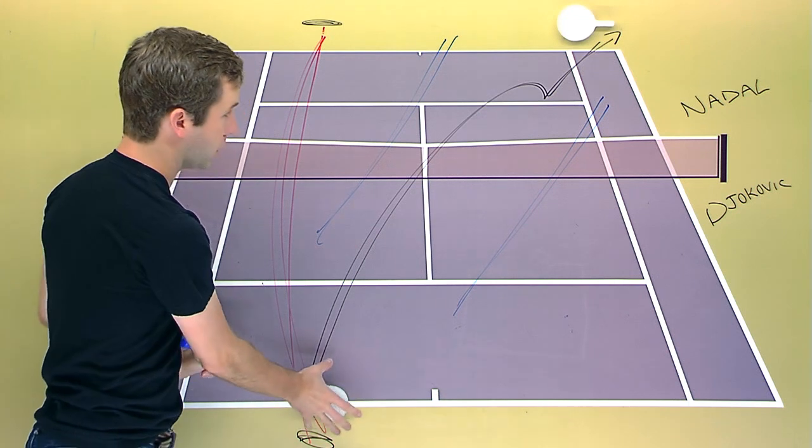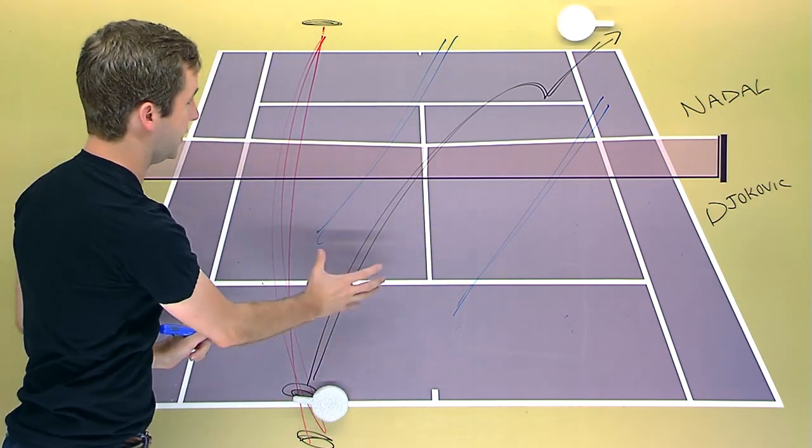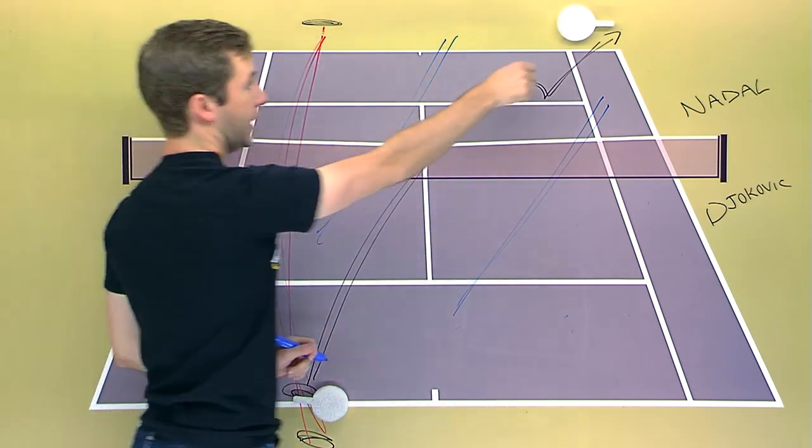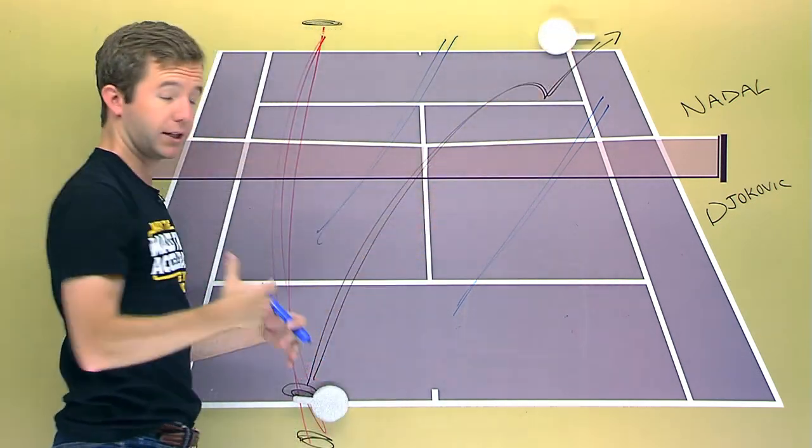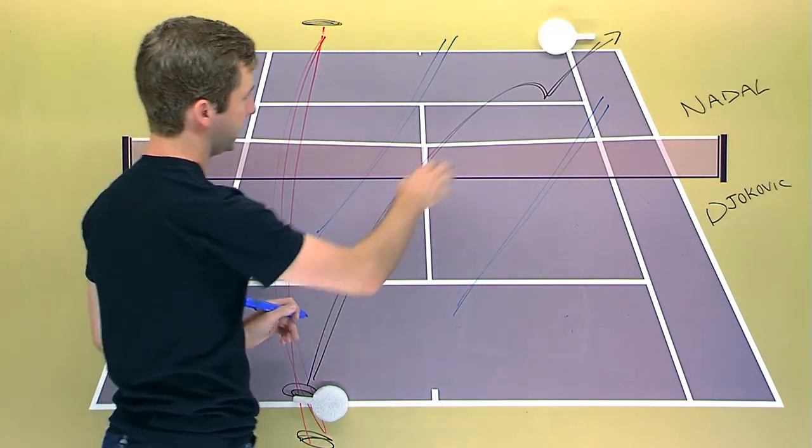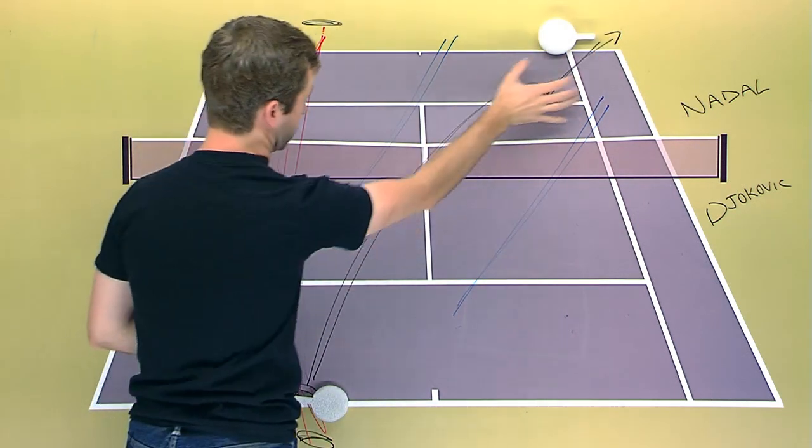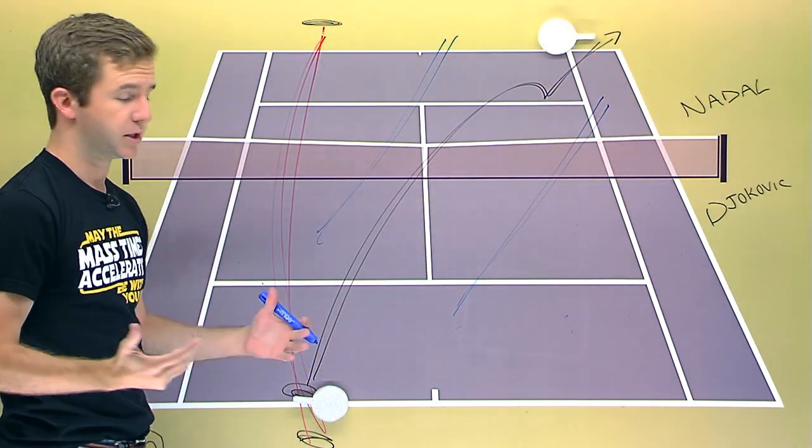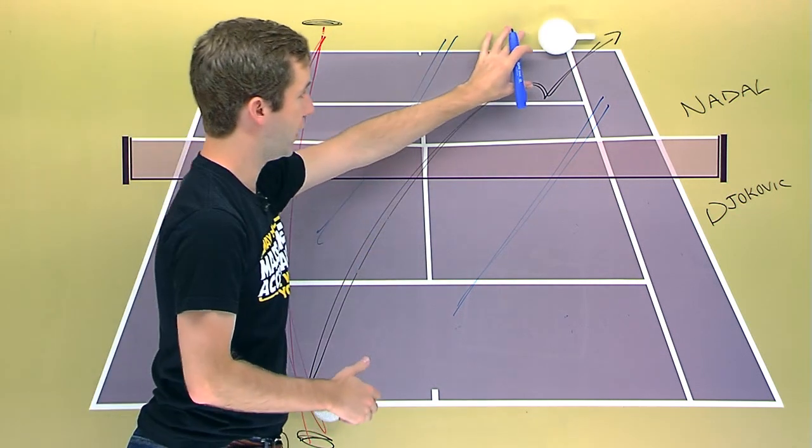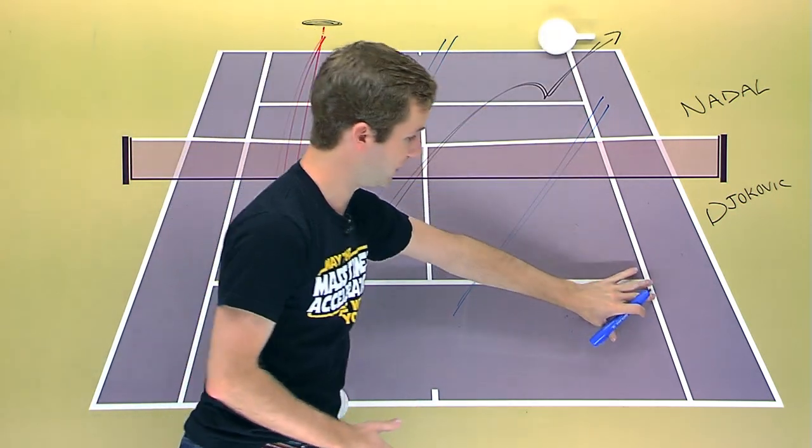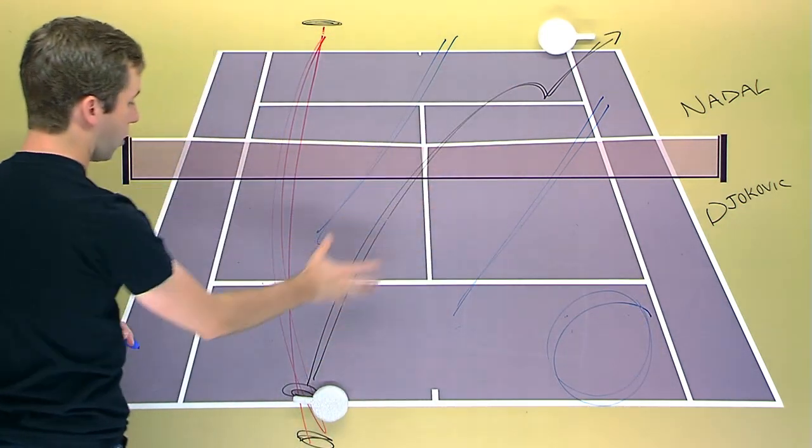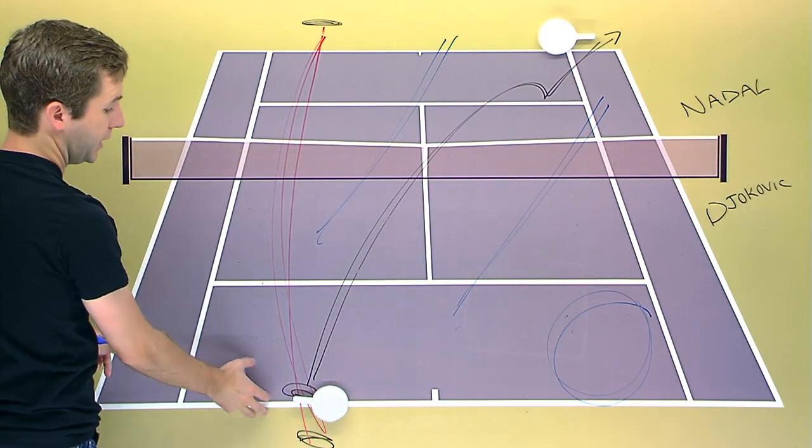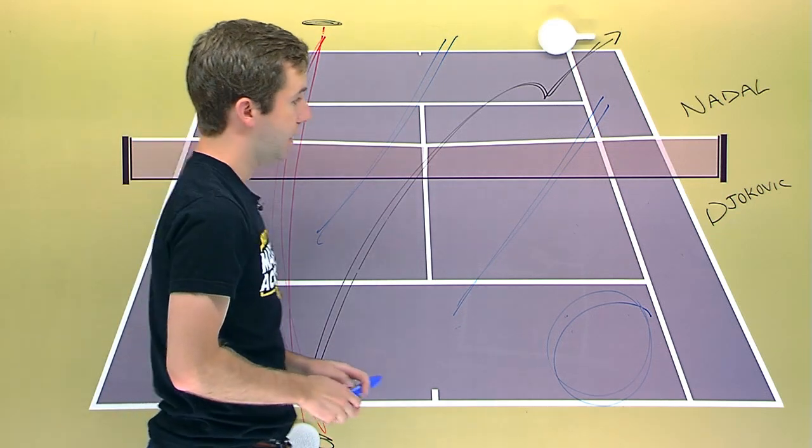And Djokovic is perfectly positioned to handle that. So he's going to be up in the court, probably going to get a short ball. He can either go back at Nadal's backhand, this is now a running backhand, which is going to be quite difficult. Or if Nadal is far off the court and is recovering, maybe he goes behind him to hit a winner. Regardless, Djokovic is in the driver's seat here. So to get out of this, Nadal really has to hit a good shot, maybe into this window of the court. Or a quality forehand cross-court that pushes Djokovic back.